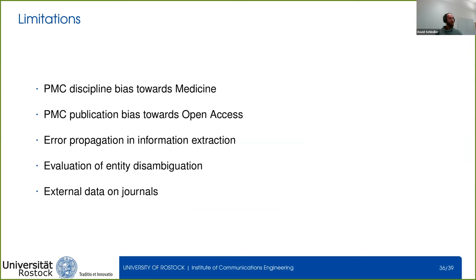Before my conclusion, I'd like to talk about the limitations. All analyses are based on data from PMC, which leads to a selection bias — a discipline bias towards medicine since PMC is mostly focused on medicine, and a publication bias since all articles are open access. Error propagation is present in the information extraction but was not included in the evaluation metrics. Entity disambiguation has proven very difficult, and some analyses rely on external data for journal rank and scientific disciplines, so the analysis can only be as good as that external data.